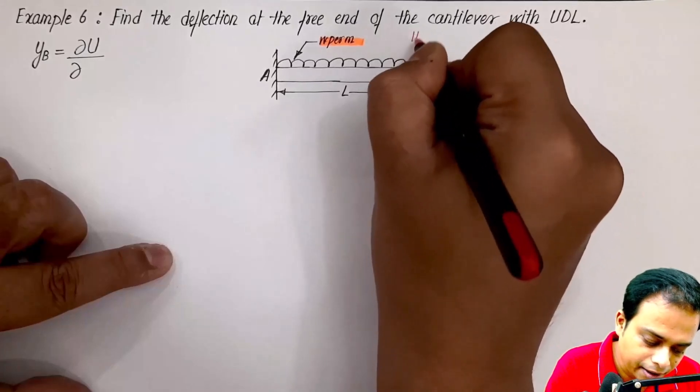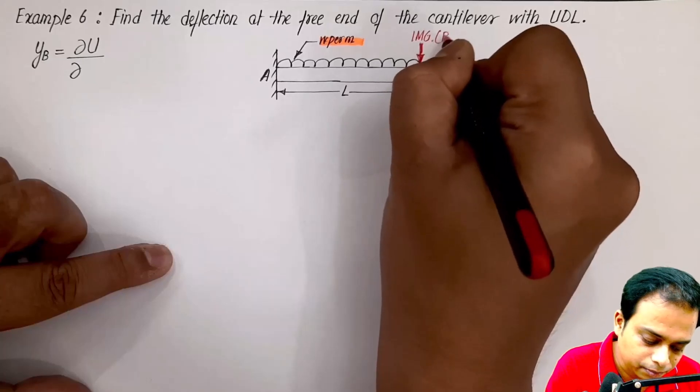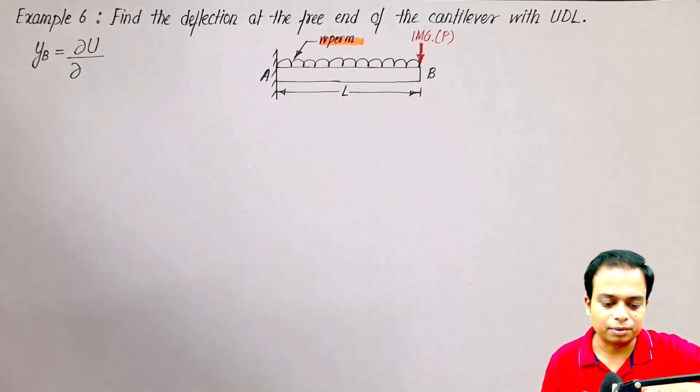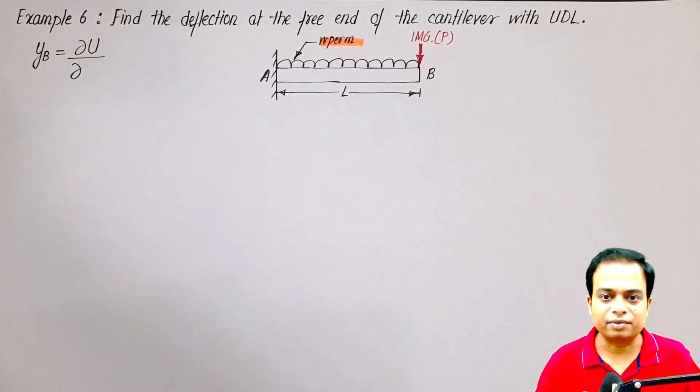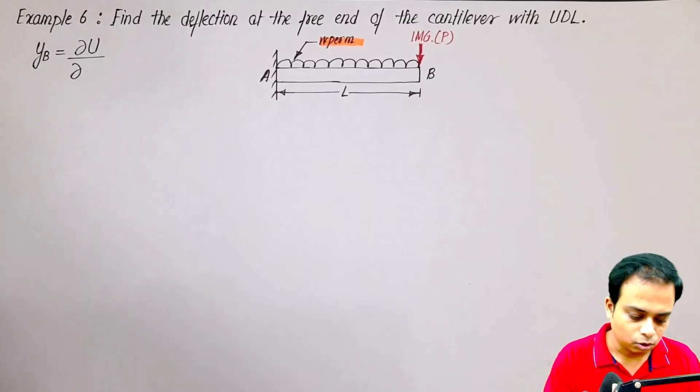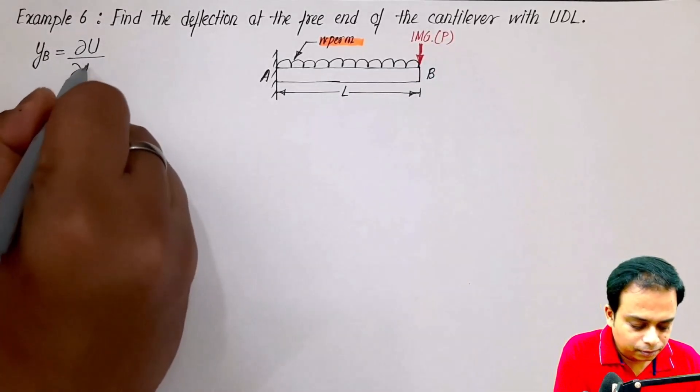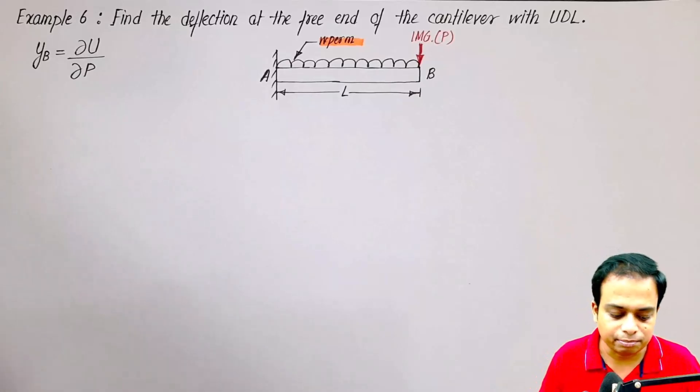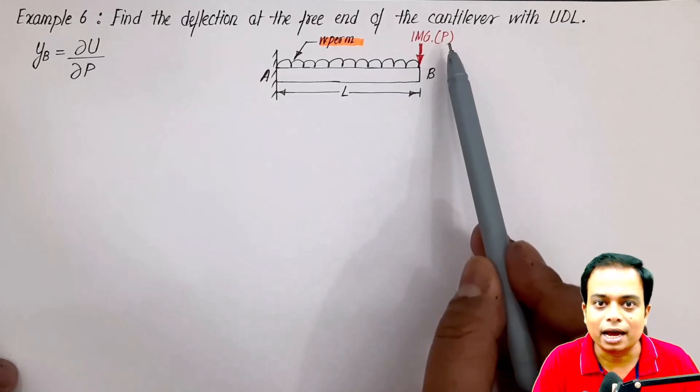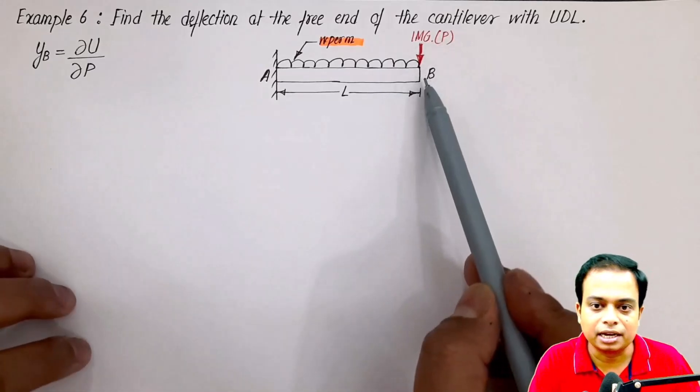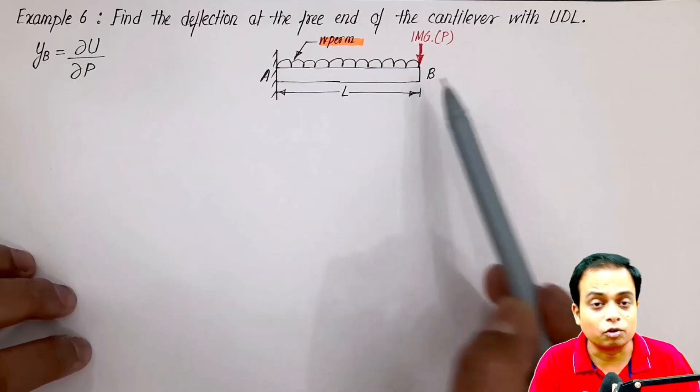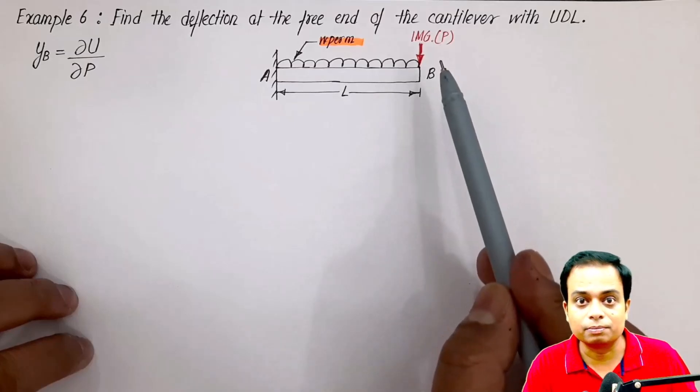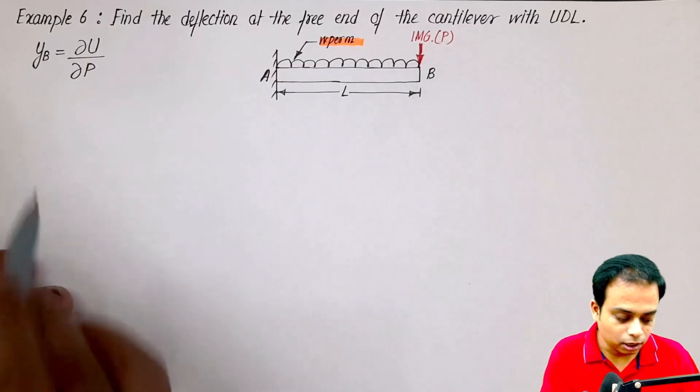Let's call this as load P. How do you proceed from here? So del u by del p. Once all the calculations are done, once you have the final expression, you can simply put this load equal to zero and get the final value of deflection at this point B. If you haven't seen my previous video, do see that also. There also we used a fictitious load, an imaginary load.